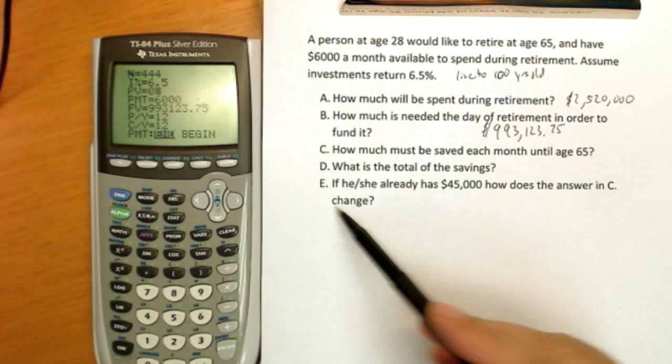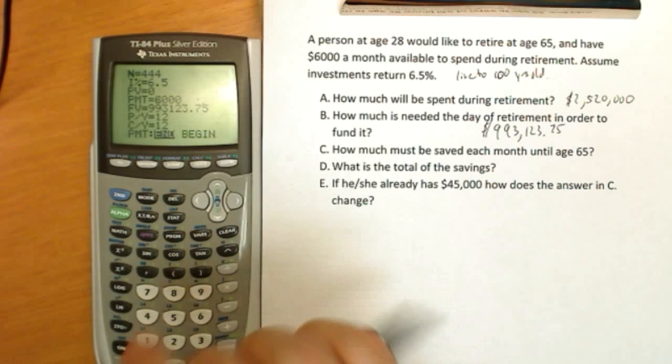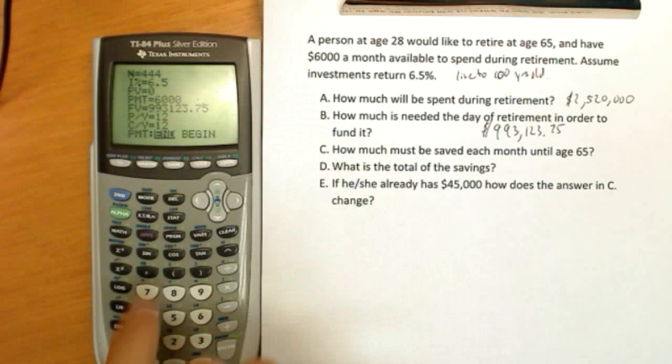The money I save is still being invested at 6.5%. Right now, I don't believe I have any money saved, although in E, we're going to change that to where I already had $45,000. And we're going to solve for payment. How much do you have to save each month to reach this future goal?